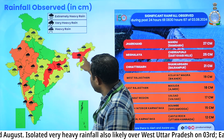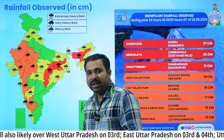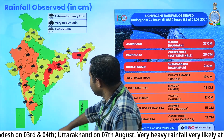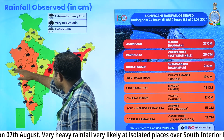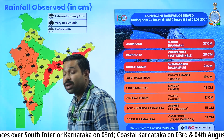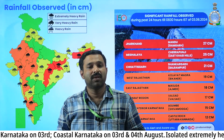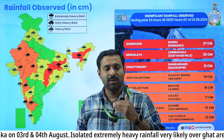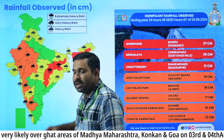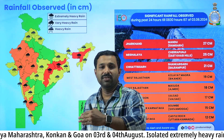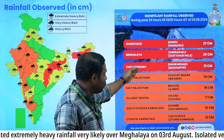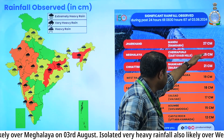Over Assam, Meghalaya, Jharkhand, and Chhattisgarh, extremely heavy rainfall was observed — that is rainfall greater than 20 centimeters. The regions marked in orange, like Rajasthan, East Gujarat, Marathwada, and coastal Karnataka, received very heavy rainfall of 12 to 20 centimeters. Regions marked in yellow received heavy rainfall of 7 to 12 centimeters. The maximum rainfall of 20 to 27 centimeters was recorded over Jharkhand.